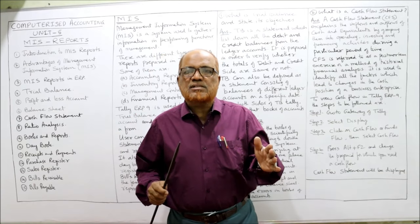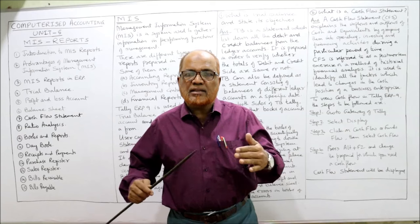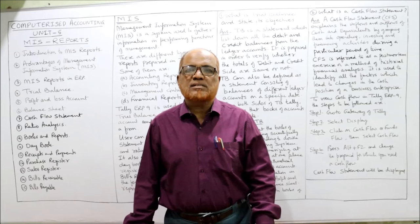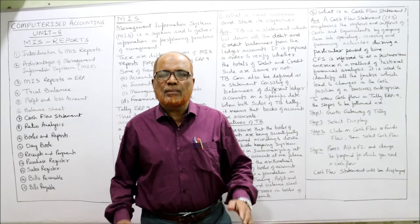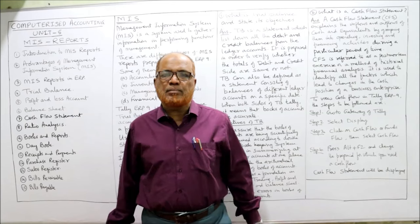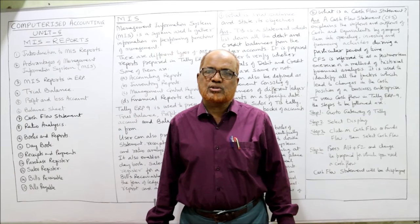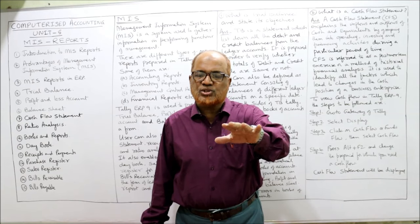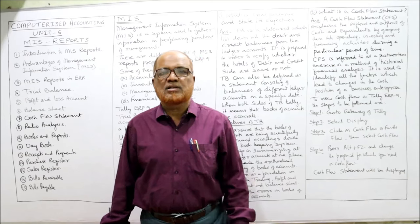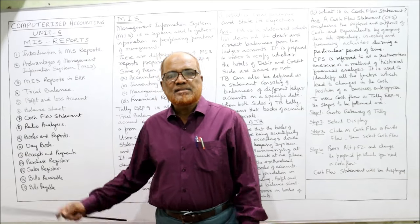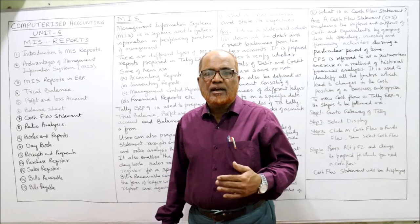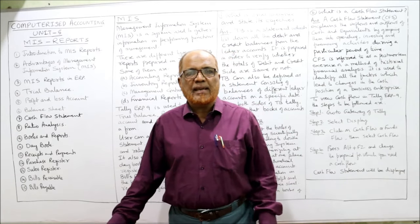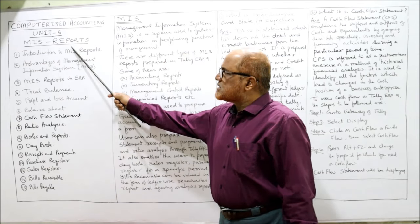Management's main function is to take decisions, and decisions can be taken with the help of information. There should be a system which continuously generates and passes information to management, so that management can take prudent decisions. The quality of management decisions depends on the quality of the reports it has. Tally ERP 9 generates a number of reports helpful to management in decision-making.